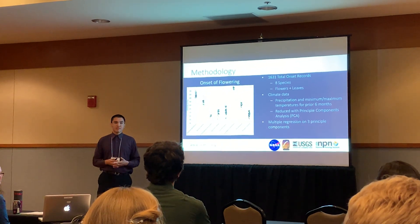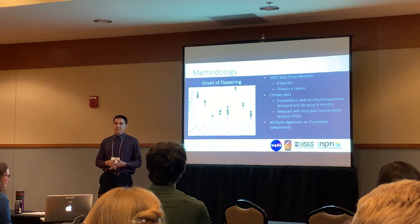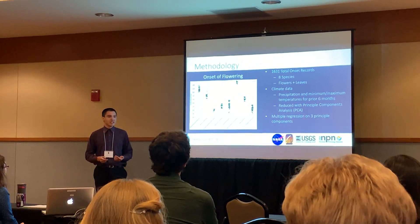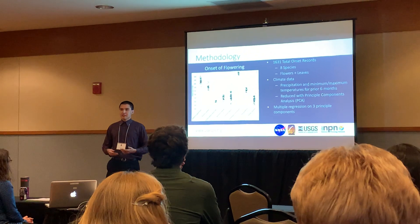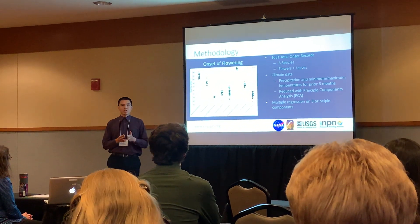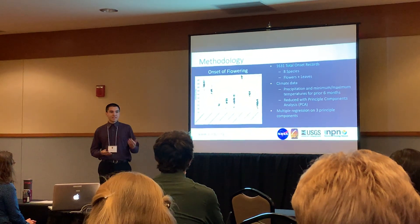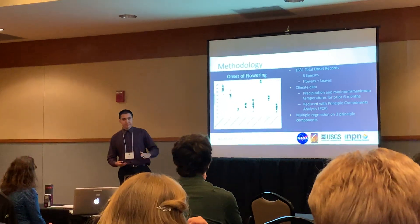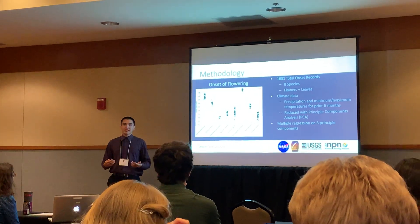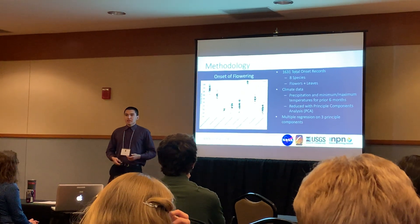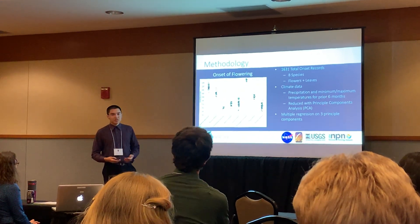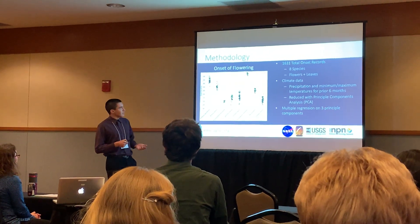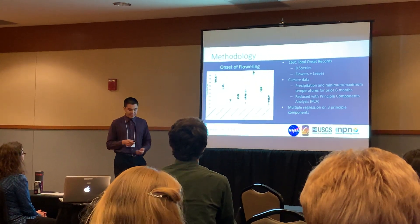I reduced all of this with principal component analysis. PCA is a method of dimensionality reduction where you maximize the variance in a larger dataset into a smaller number of variables, with the most variance captured on the first principal component, and then maximized further on the second, etc. Importantly, these components are all independent of one another. I used these three principal components in a simple multiple regression against the onset of life stages such as flowering and leafing.